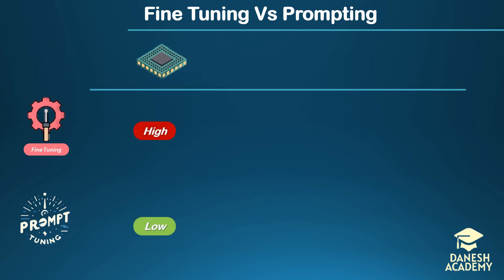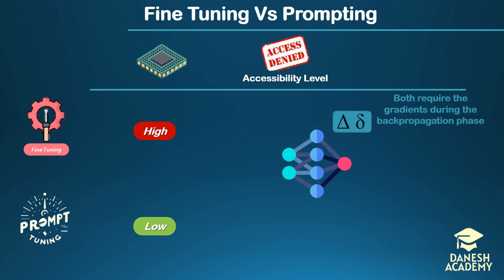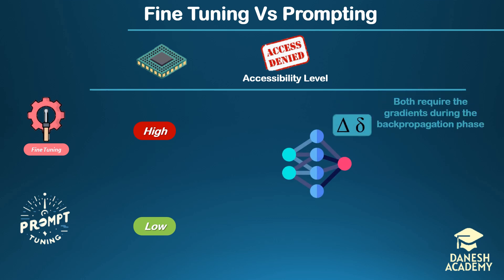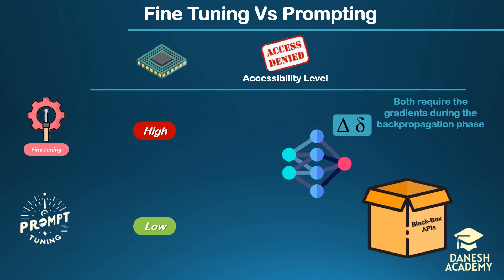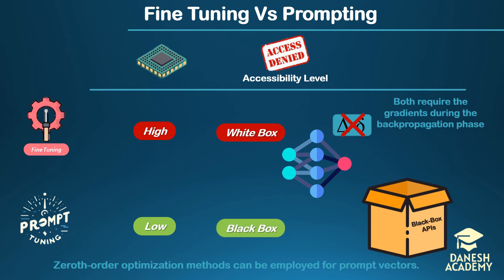Even if someone has access to ample storage and computational resources, they still require all the gradients during backpropagation when passing the downstream dataset through the model. Many foundation models are provided only as APIs and can only be treated as black boxes, with no access to parameters and their corresponding gradients — you can only input an instance and retrieve the output. However, zeroth-order optimization methods can be employed for prompt vectors, making them practical even when foundation models are available only as black boxes.